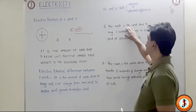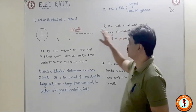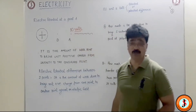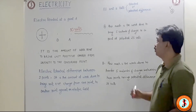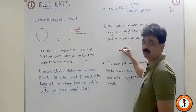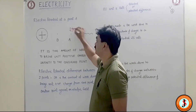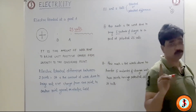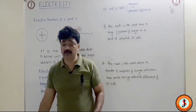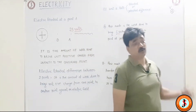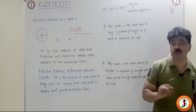Now, how much is the work done to bring five Coulombs of charge to a point at potential 25 volts? Suppose the potential is 25 volts — that means to bring one Coulomb of charge I have done 25 joules of work. So what does potential at point A being 25 volts mean? It means that to bring one Coulomb of charge from infinity to point A, we have done 25 joules of work.